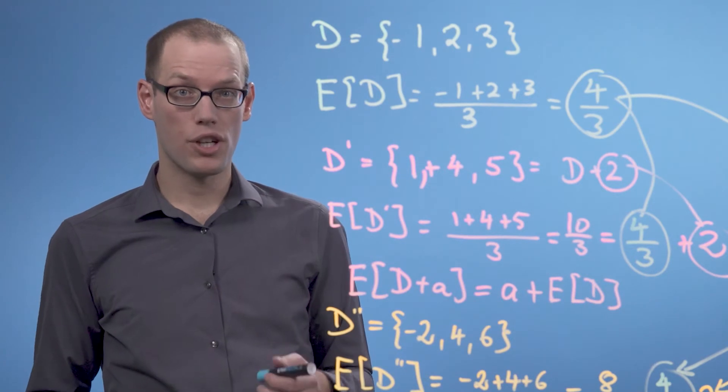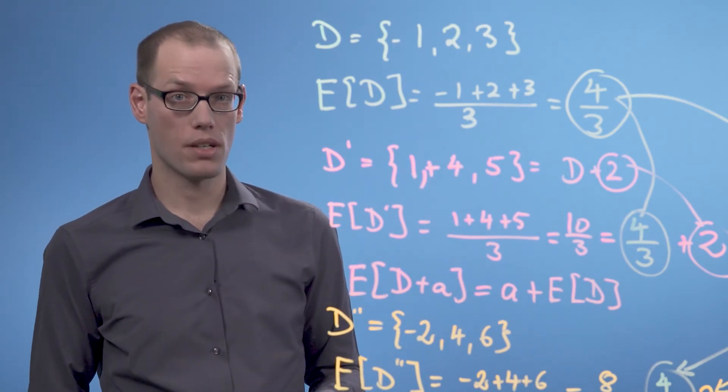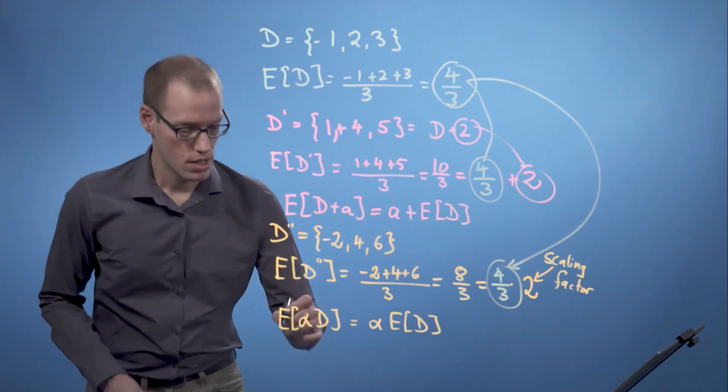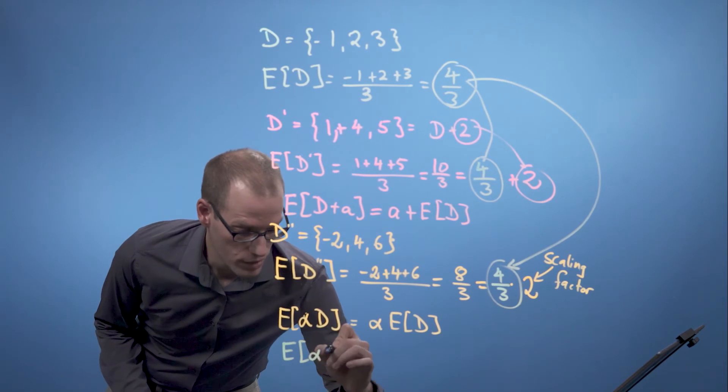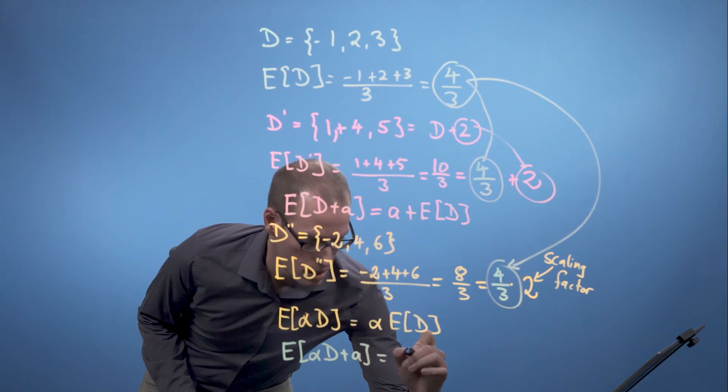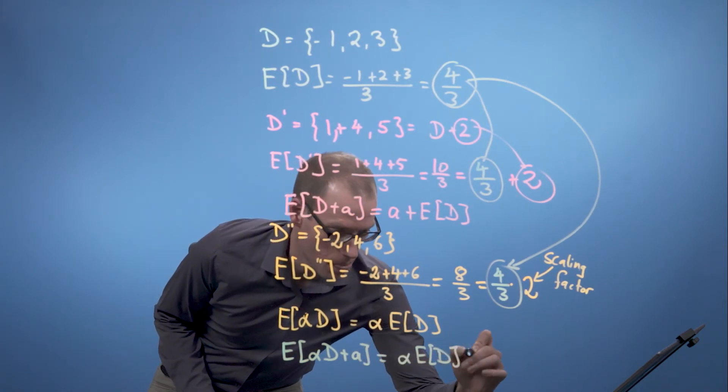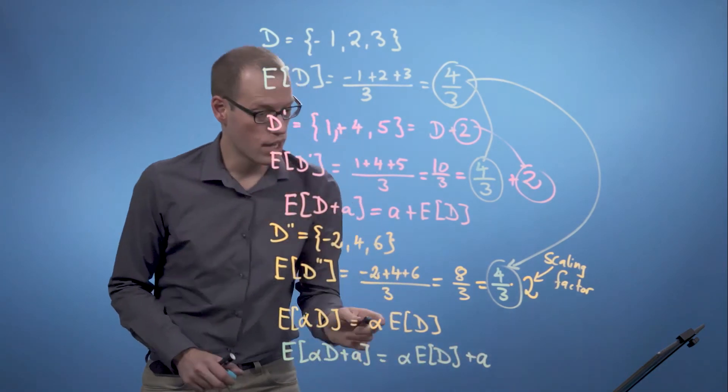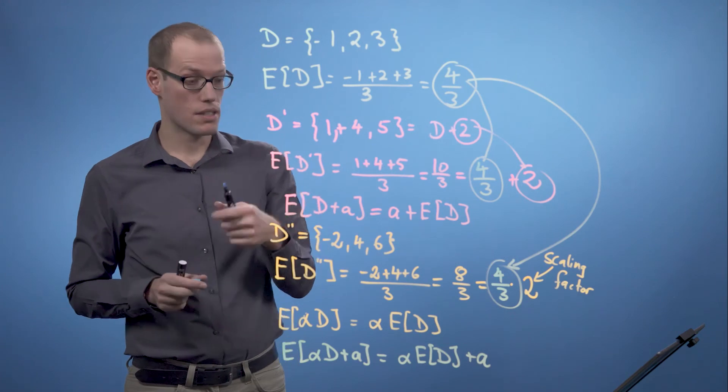Putting everything together we can shift and scale our original data set and the new mean of this linear transformation is given as follows. If we compute the expected value of alpha times D plus A, we get alpha times the expected value of D plus A, where alpha is the scaling factor and A is the shift.